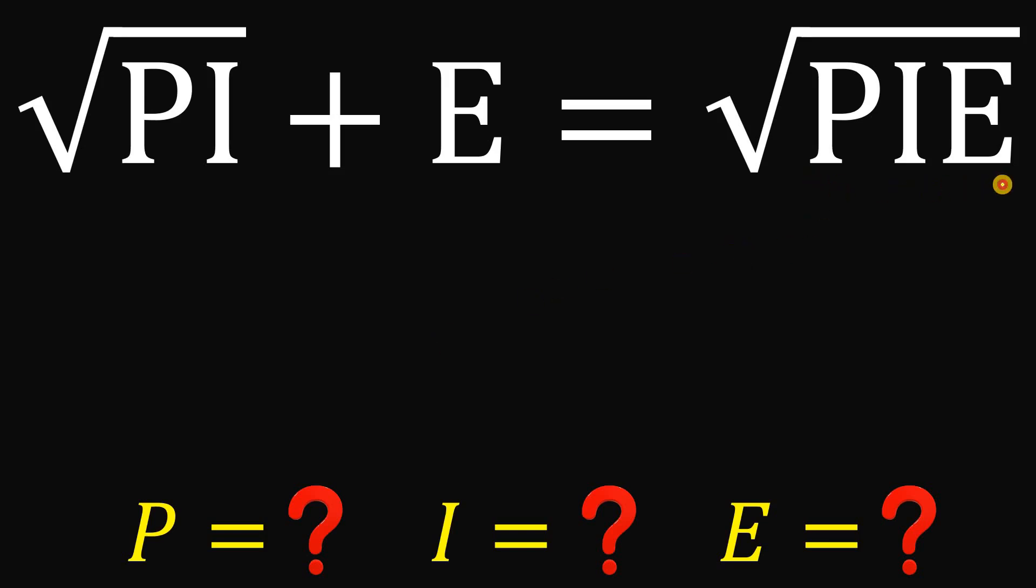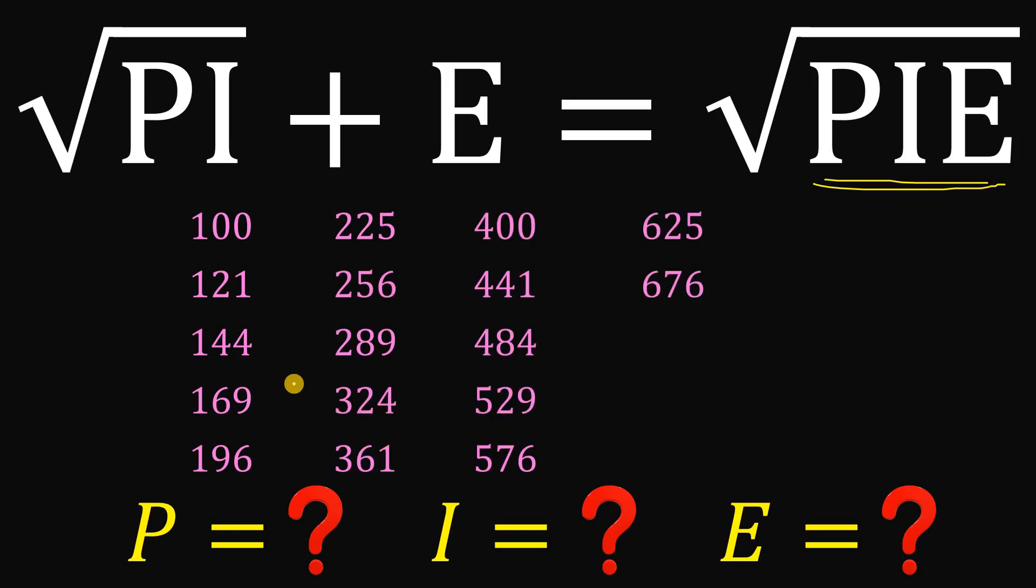Because this three-digit number PIE must be a perfect square number. And there's few three-digit perfect square numbers. So let's start with 10 squared, which is 100. 11 squared is 121, 12 squared is 144, up to 31 squared. Because 32 squared is 1024, which is a four-digit number.